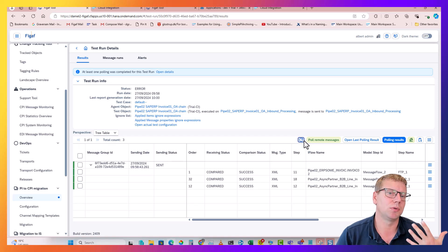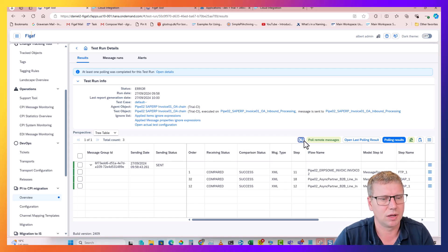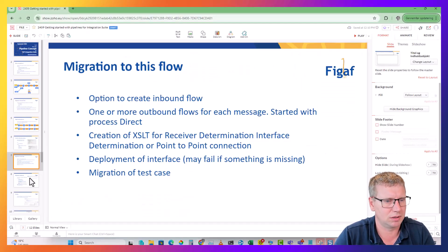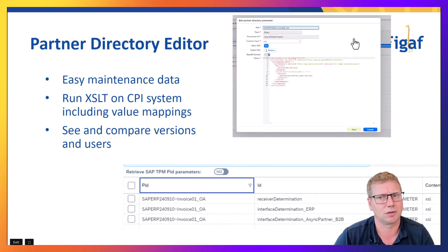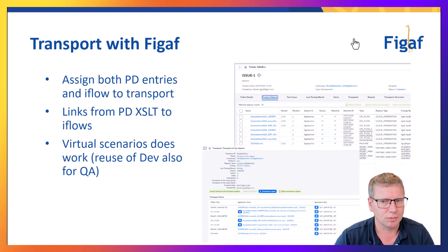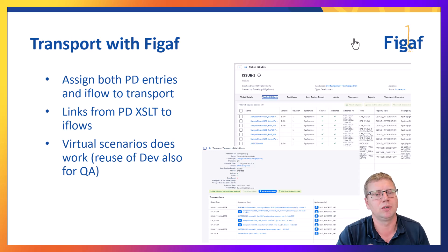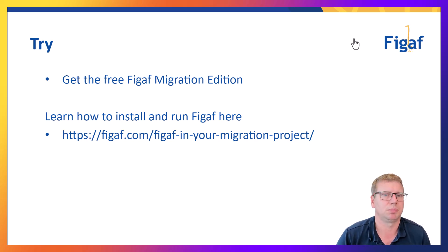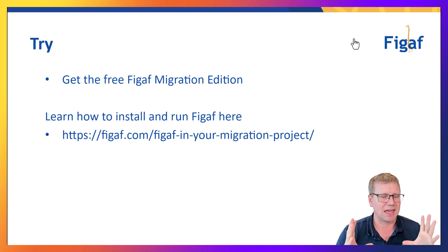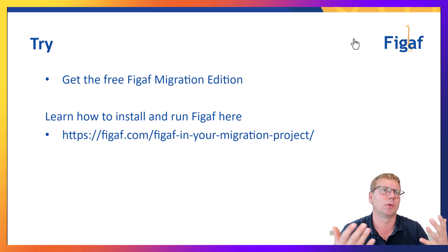I hope you got some good understanding about how this works and what opportunities you have when working on these scenarios. We looked at the iFlow, the test case that we migrated, and the Partner Directory and how to manage it. We can obviously also transport this with the figaf tool - we have transport and also virtualized tenants that enables you to reuse them for QA. I would recommend you go to figaf, sign up for a free trial, get started, and explore what you can actually do.